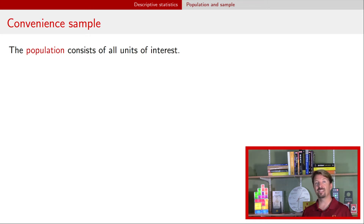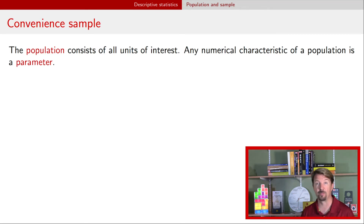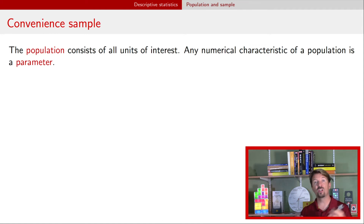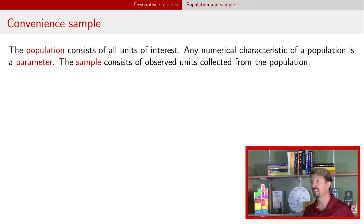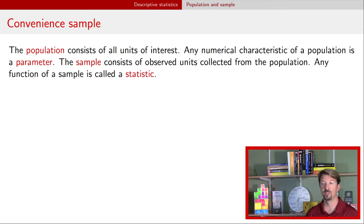From that population, any particular characteristic is called a parameter. For example, the mean weight of individuals in the United States, or the average corn yield per acre across Iowa — those are parameters. We rarely know the true value of a parameter because it accounts for all units in the population. Instead, we take a smaller subset called a sample, calculate those same quantities on it, and those quantities are called a statistic. More broadly, a statistic is any function of the data in our sample.